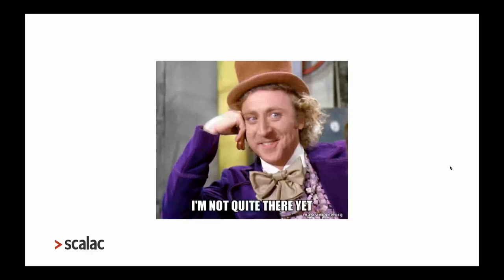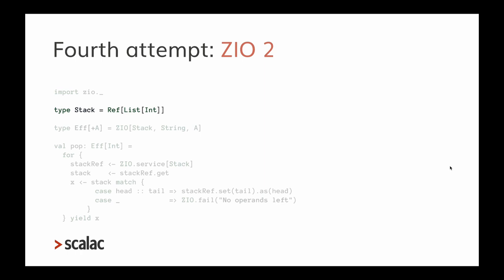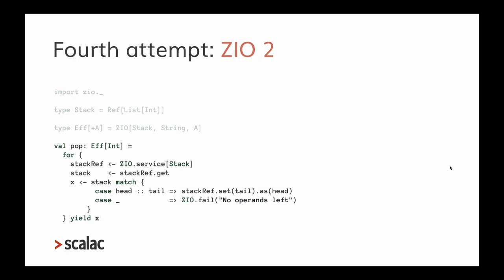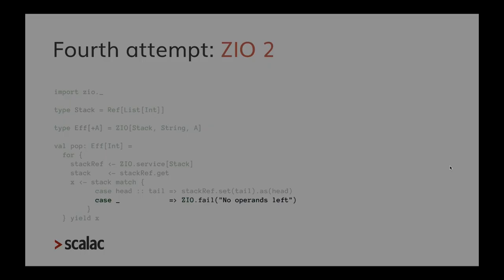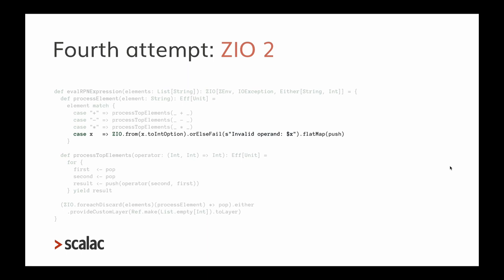So we're not quite there yet. What about using ZIO 2? The Stack type is now a list of integers inside a ZRef, and the Effect type is ZIO where the environment is the Stack, it can fail with a String, or succeed with a value. The pop method is much nicer — no awful type annotations, and to fail I simply call ZIO.fail. The core solution again fits in one slide.